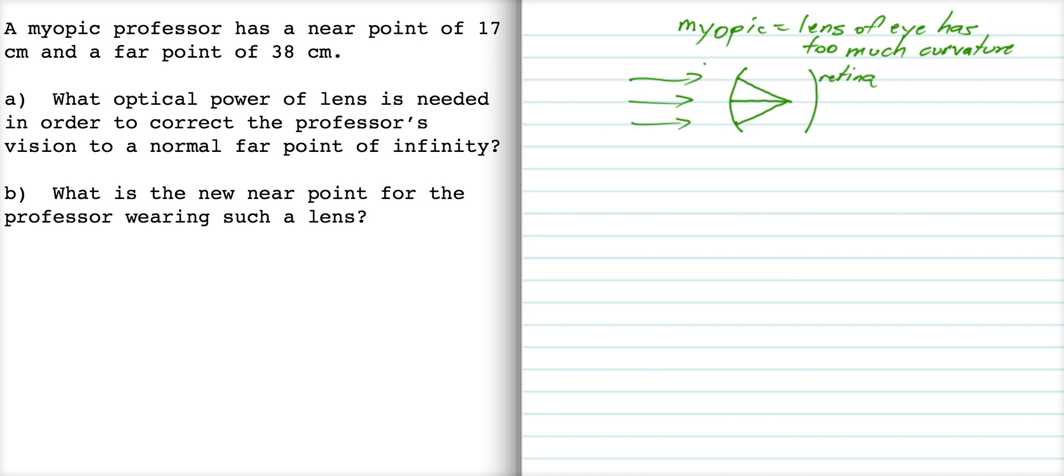Alright, so what we need is some kind of a diverging lens to correct things so it comes in and it's diverging so that the corrected rays meet at the right place. So we need a diverging lens to correct.